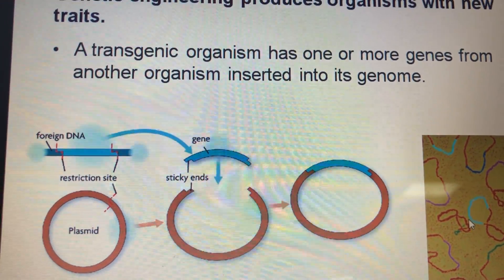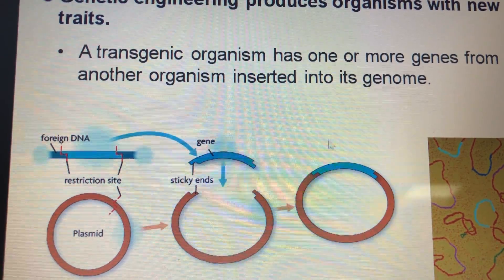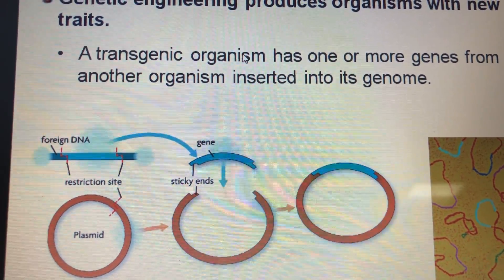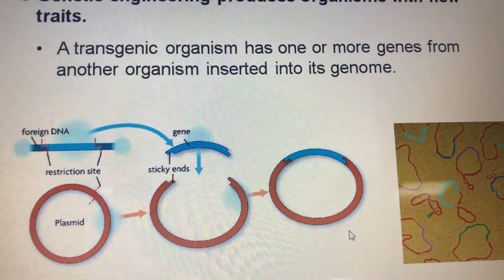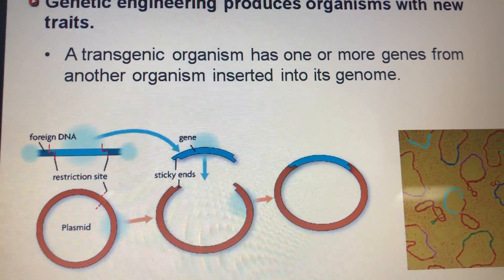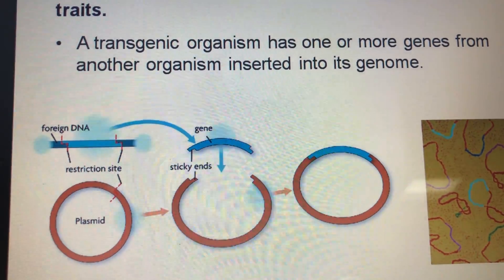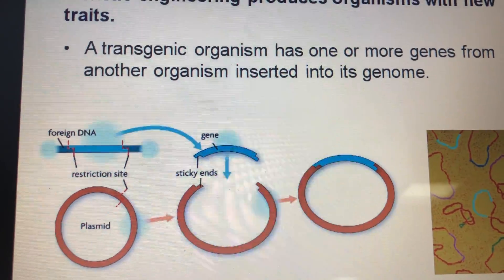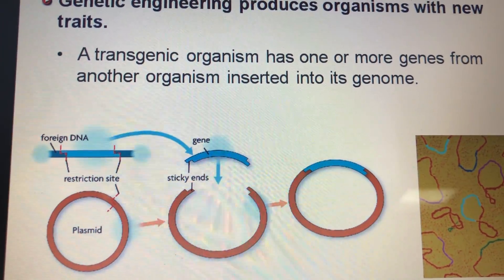This recombinant DNA is inserted back into the bacteria. The bacteria replicate and express the same gene every time they replicate, so the bacteria become transformed into a new organism. Any organism that has one or more genes from another organism is called a transgenic organism.